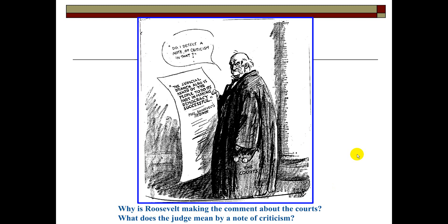Why is Roosevelt making the comment about the courts? What does the judge mean by a note of criticism? Take a look at this cartoon. You notice the judicial branch is asked by the people to do its part in making democracy successful. The Supreme Court wound up declaring a lot of the different New Deal laws and state laws unconstitutional, and FDR was very frustrated and made speeches against the court.